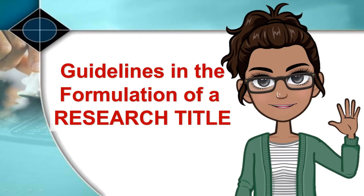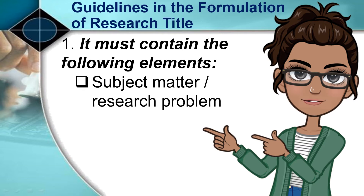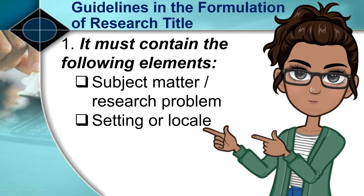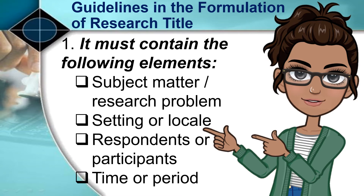Here are the selected guidelines in the formulation of a research title. Number 1: The title must contain the following elements: the subject matter or research problem, the setting or locale of the study, the respondents or participants involved in the study, and the time or period when the study was conducted. If the title becomes too long because of these elements, the time frame or period may be omitted except in evaluation studies.